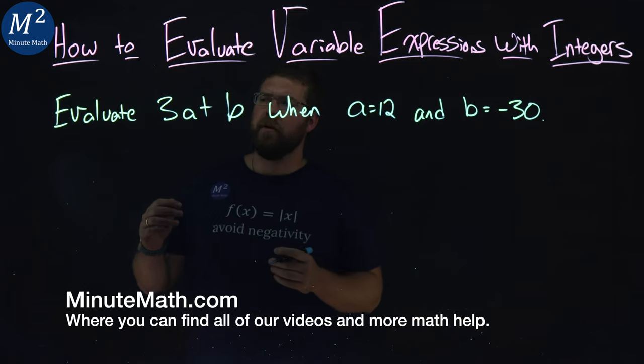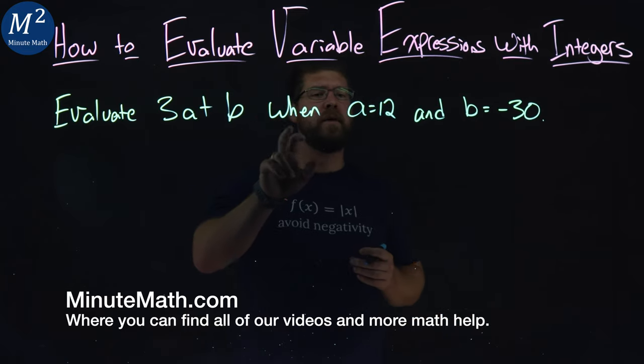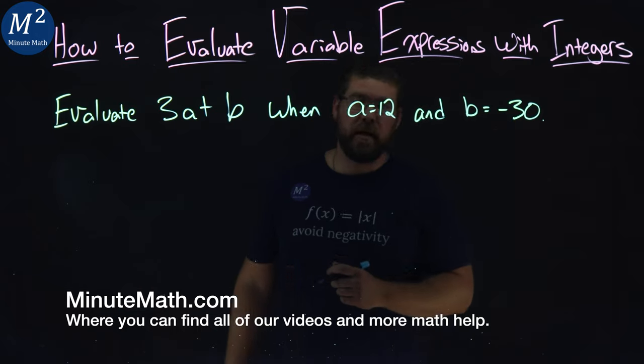We're given this problem here. Evaluate 3a plus b when a equals 12 and b equals negative 30.